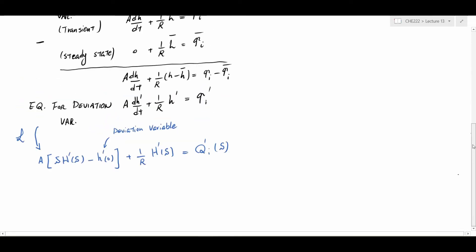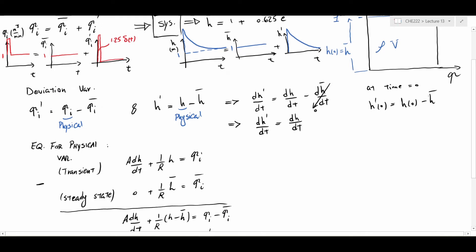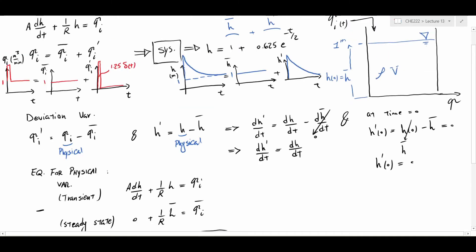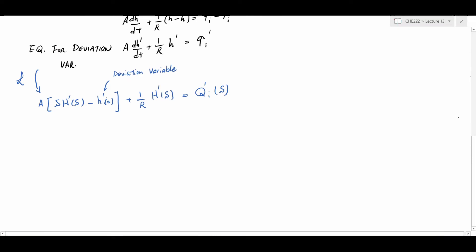The other thing I need before solving this equation is to calculate h-prime at time zero. Using the definition of h-prime, at time zero: h-prime = h(0) − h-bar. Since we assume the system was initially at steady state, h(0) = h-bar, which means h-prime at time zero is zero. This is one of the key results based on the definition of deviation variables. So we go back to our deviation equation and replace h-prime(0) with zero.